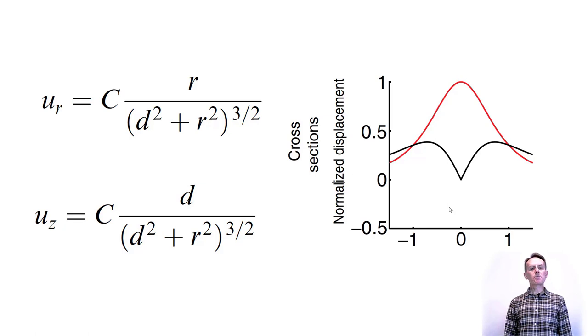If a radially symmetric deformation field is observed on a volcano, the source is located beneath the center of deformation, and the width of the deformation field will give an indication of the depth of the source.